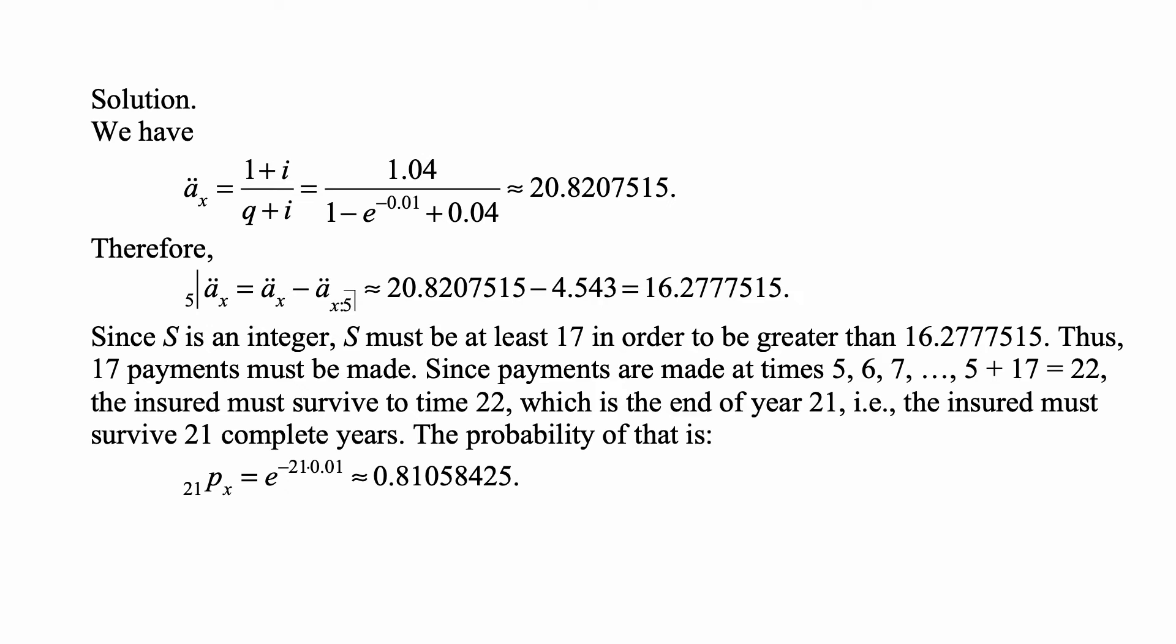The deferred annuity actuarial present value is A double dot X minus A double dot X colon angle 5. So it's 20.8207515 minus 4.543, that's given in the problem, and that's 16.2777515 approximately.